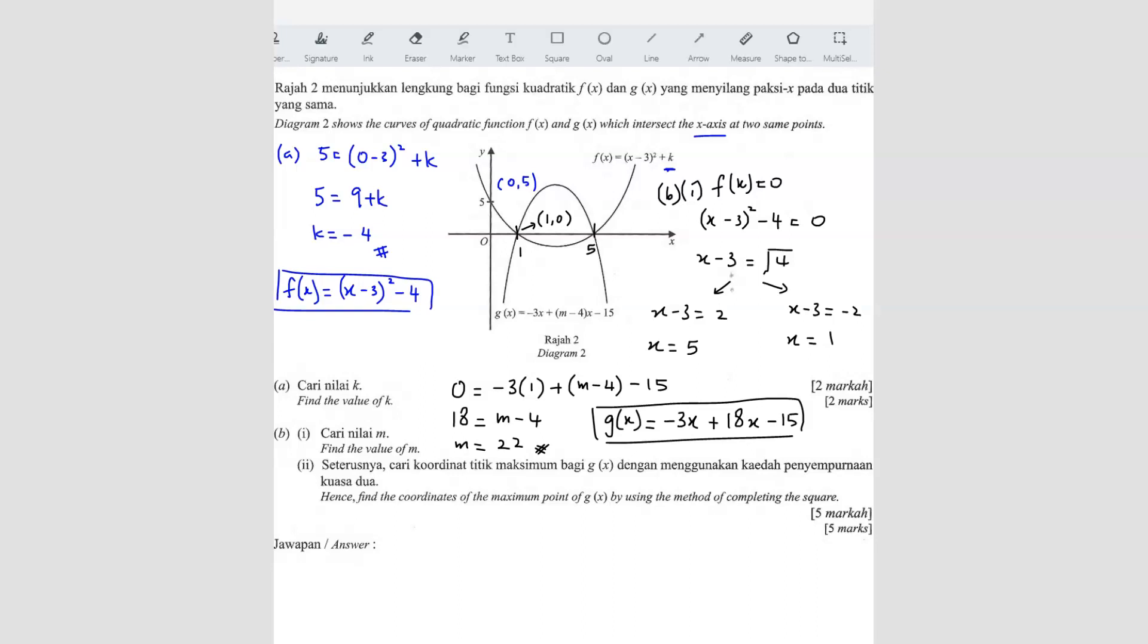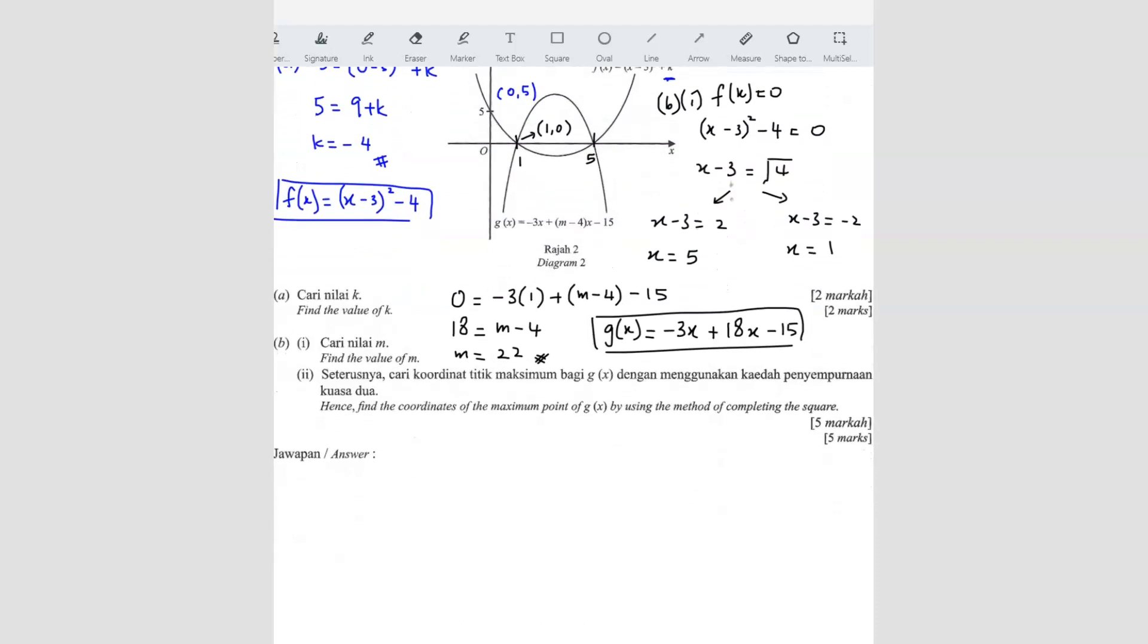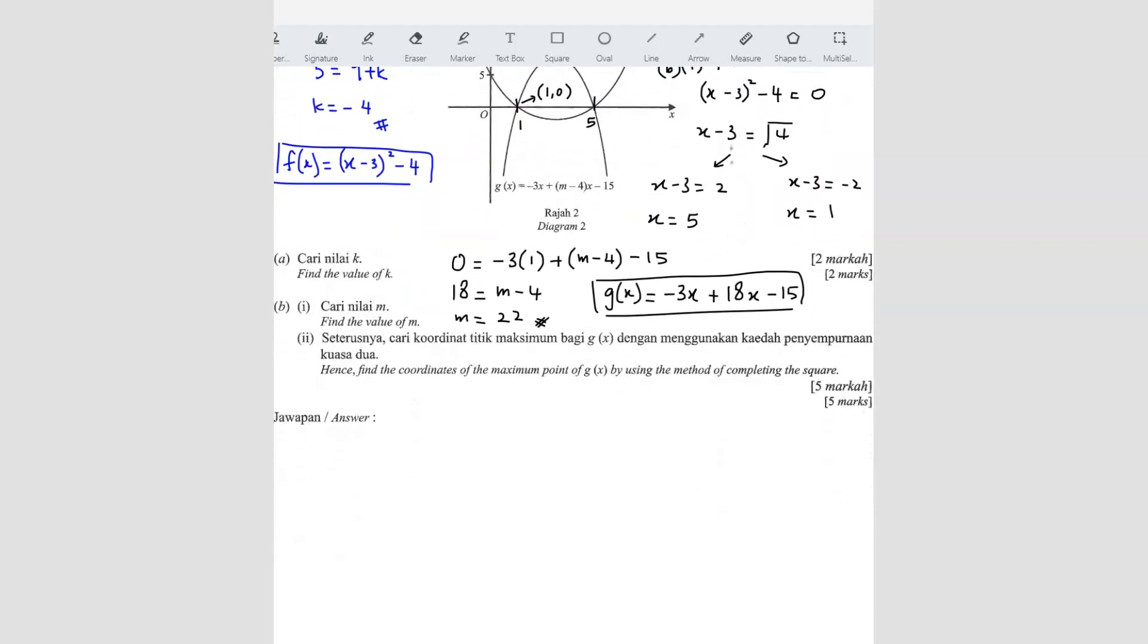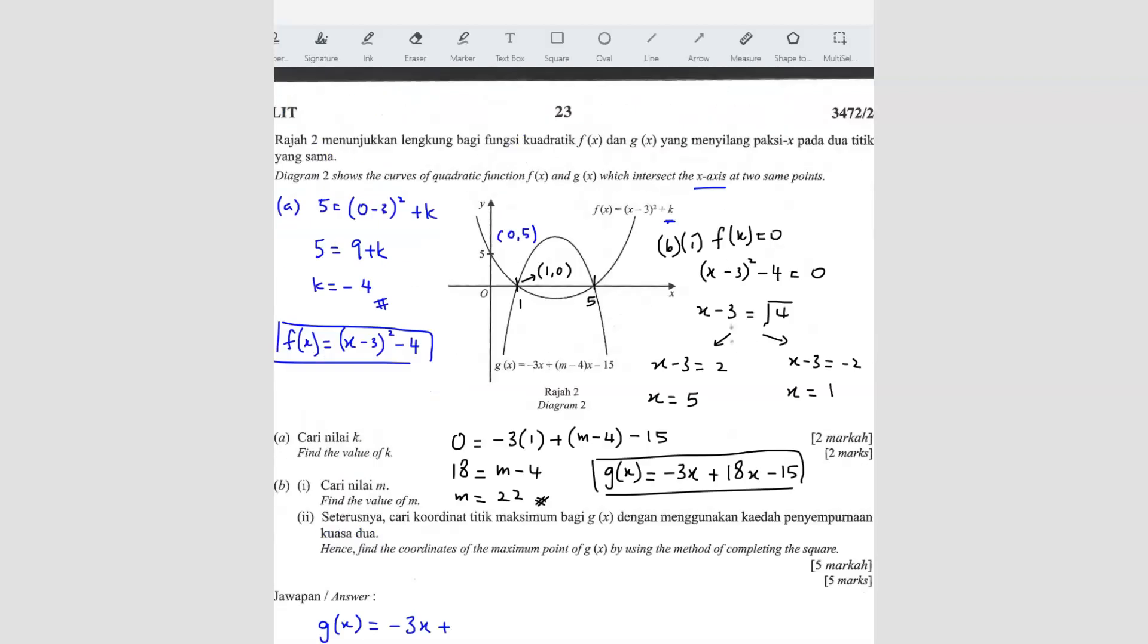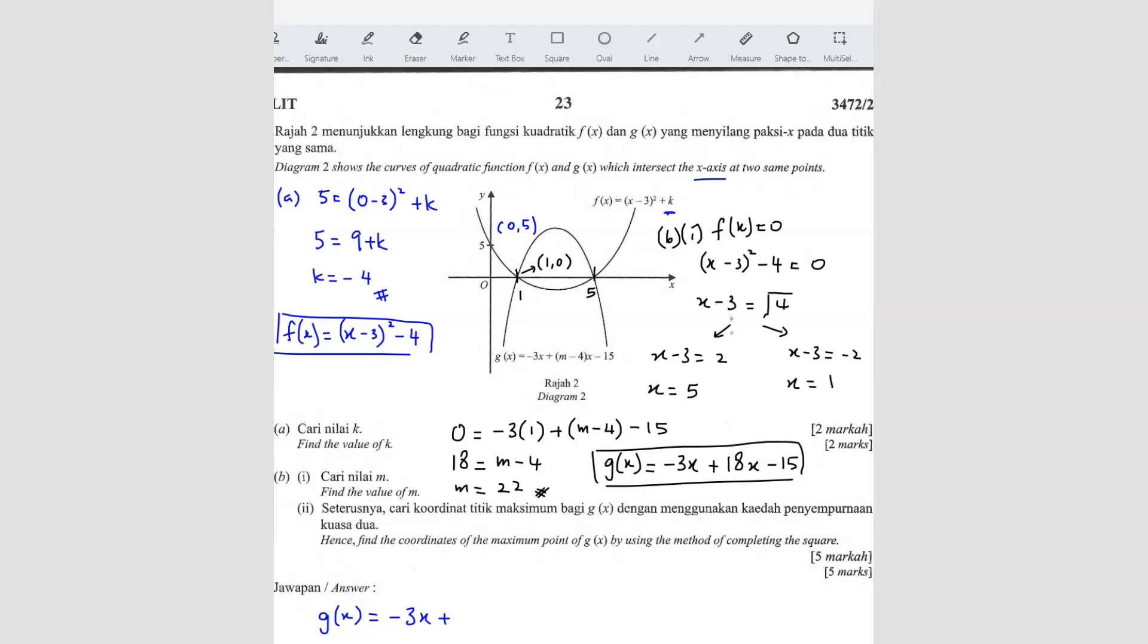Hence, find the coordinate of the maximum point of g(x) by using method of completing the square. So they want you to use completing the square to find the maximum point. We have got... wait, g(x) equals -3x plus... wait a minute, this is supposed to be square. Sorry, my bad. I think probably here it's supposed to be a square. I think they wrote it wrongly, probably supposed to be a square here, because otherwise you can combine this.